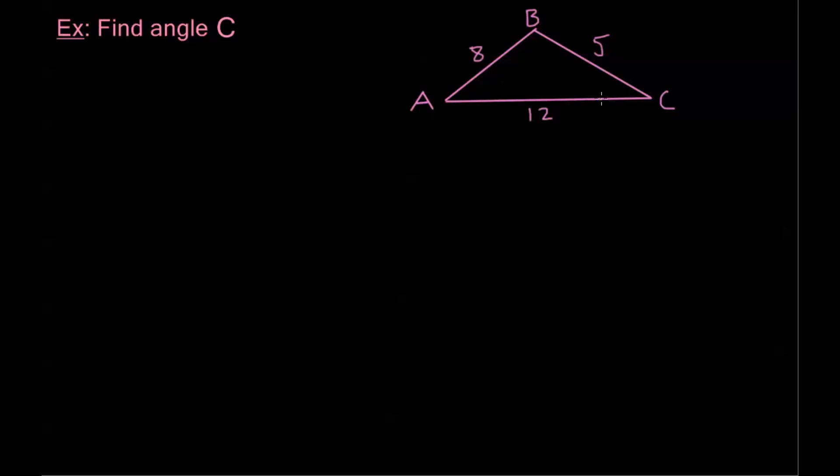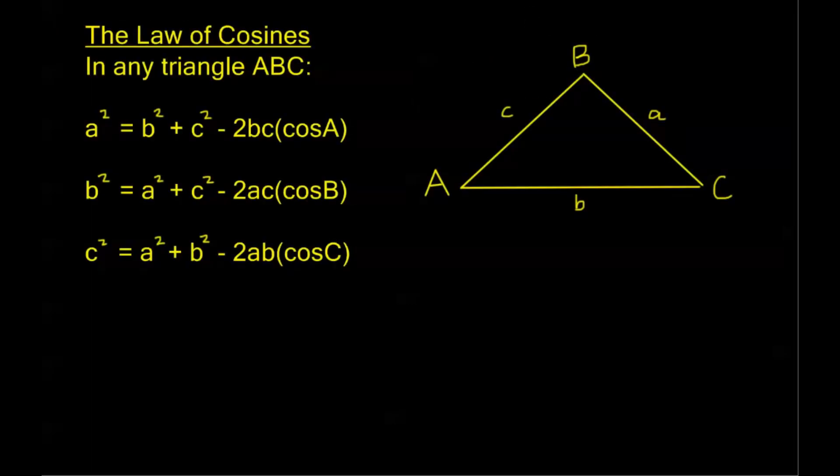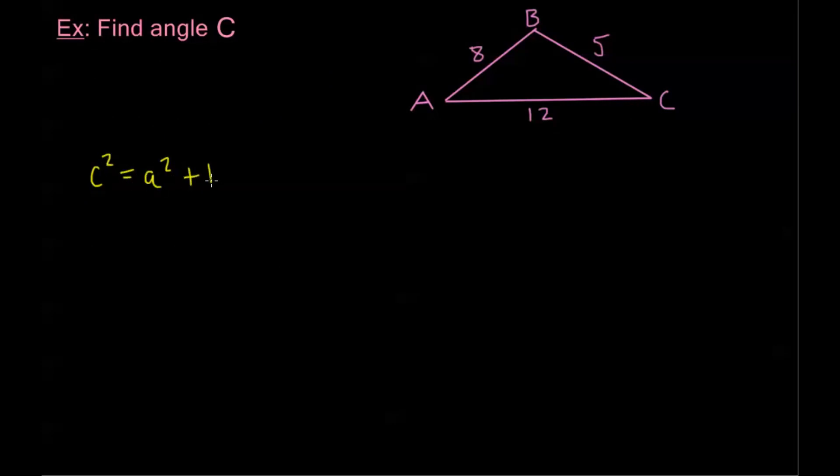If I'm looking for angle C, I need to use the formula that has angle C in it. The only formula that has angle C, coming back real quick, is going to be this third version here. This is the only one with cosine of big C, so we're going to need to use that formula here. Let's write it over here. We're going to use the formula c squared equals a squared plus b squared minus 2ab cosine C. So we have our C sandwich here.